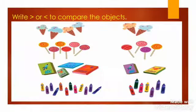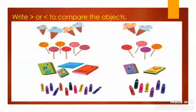Can you do this? Write greater than or less than to compare the objects. Number one: four cones of ice cream and two cones of ice cream. Number two: six lollipops and four lollipops.